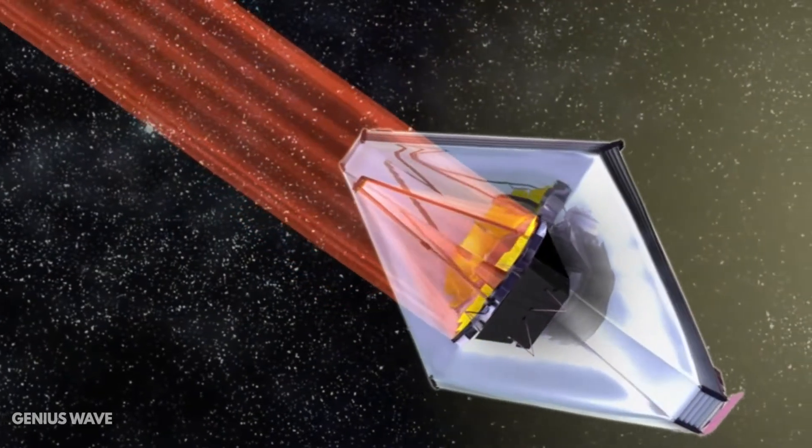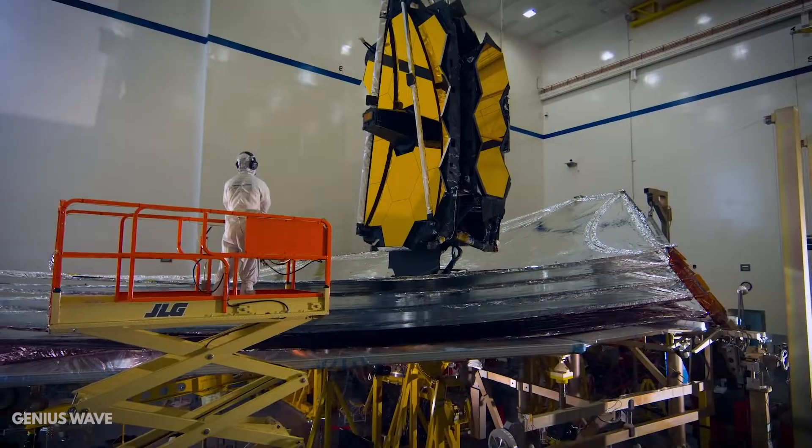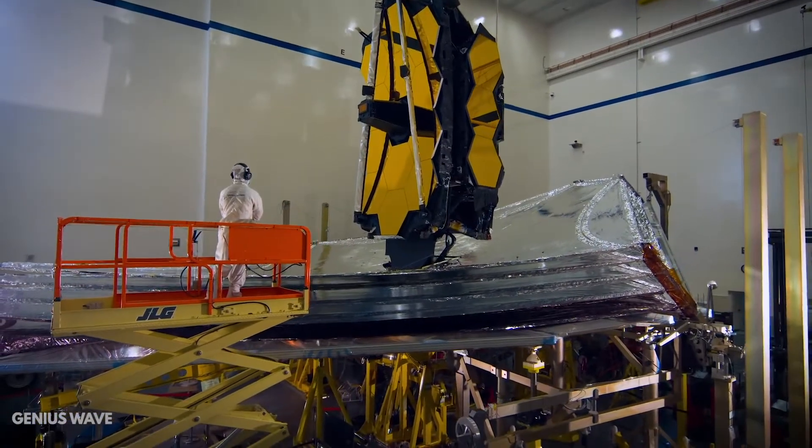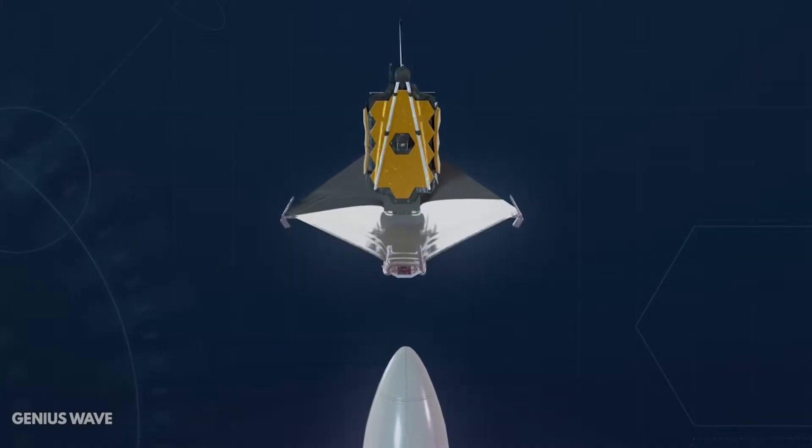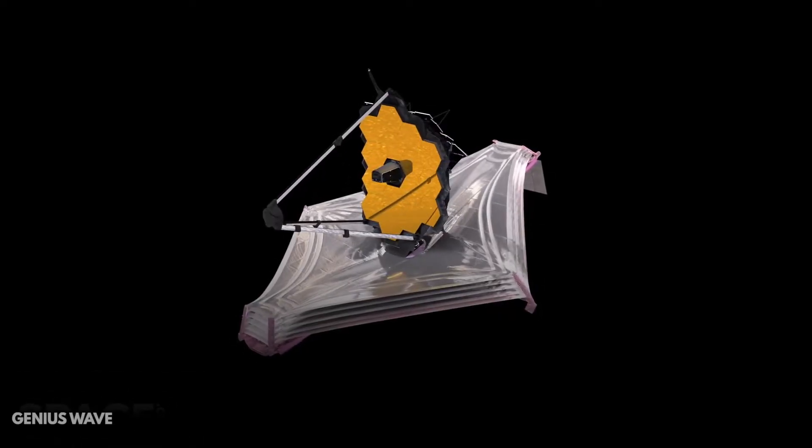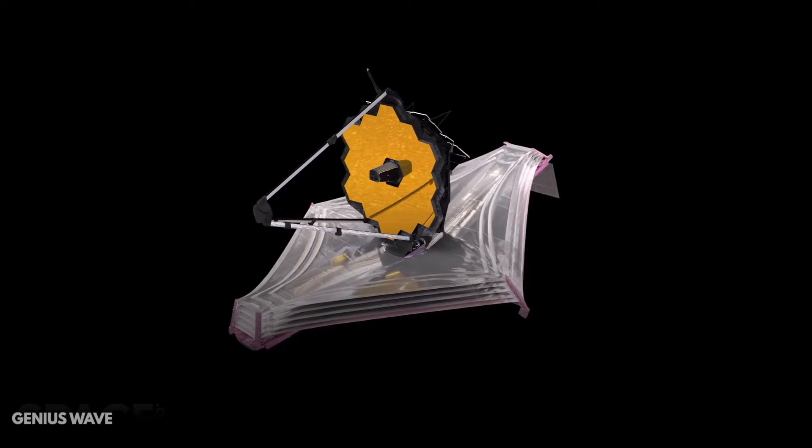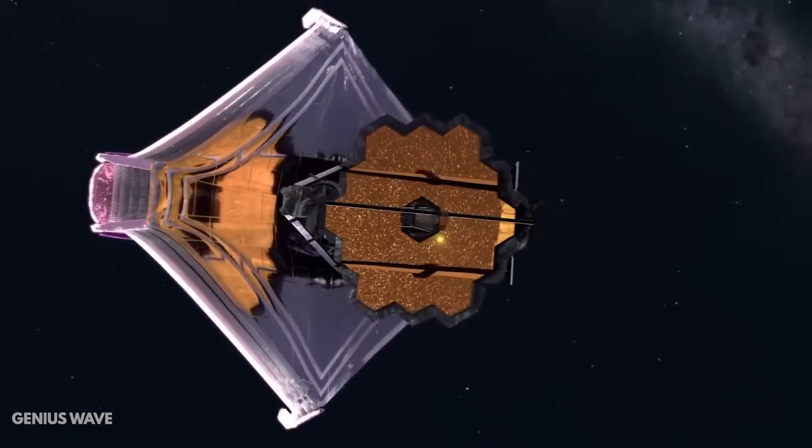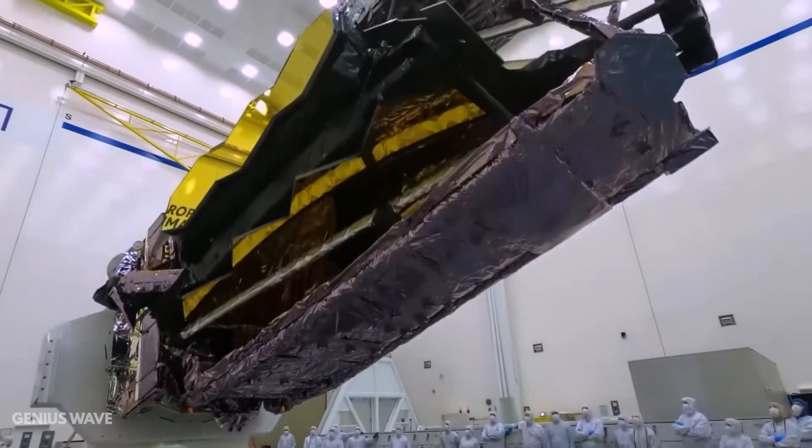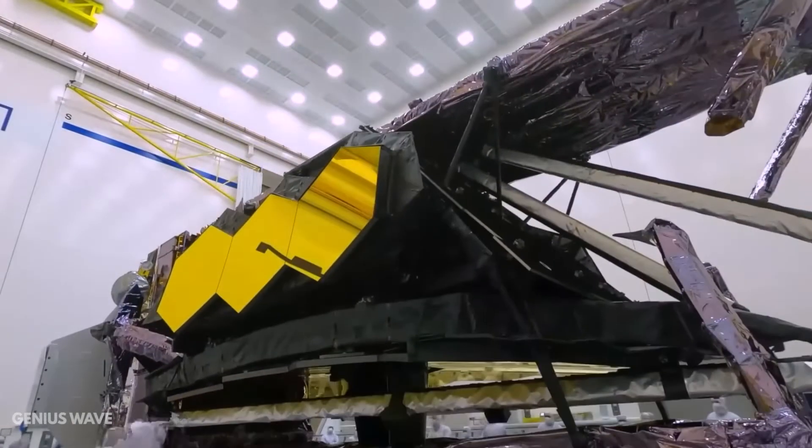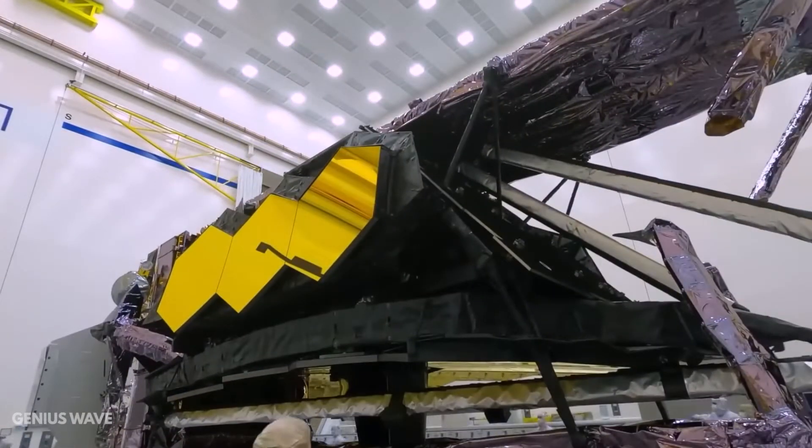The mirror of the Webb telescope is a magnificent engineering achievement. It has 18 hexagonal parts, each of which measures 6.5 meters across and can be moved along seven distinct axes, enabling controllers to focus the entire instrument. The beryllium segments have a combined area of 25 square meters. They are all coated in a thin layer of reflective gold that if peeled off and compressed into a sphere would not be larger than a tennis ball.